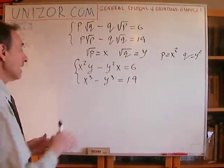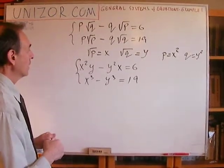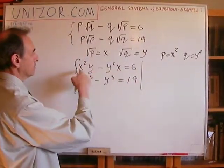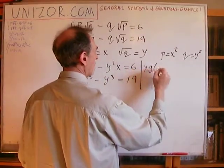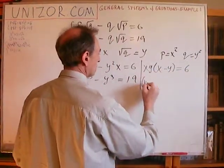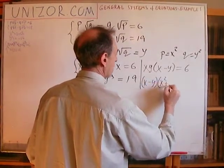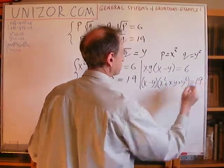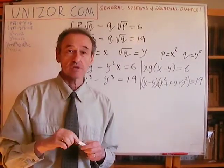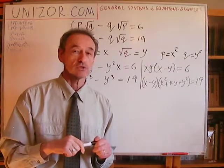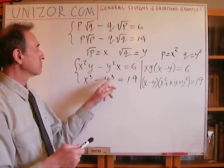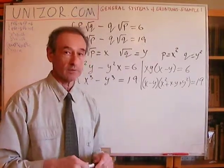Now, what can be done about this? Look — it's kind of symmetrical. I can factor out XY from the first equation to get XY(X minus Y) equals 6. And the second can be factored as (X minus Y)(X squared plus XY plus Y squared) equals 19. If you don't remember this formula, you can go back to one of my previous lectures on mathematical induction, where I present the representation of A^N minus B^N as (A minus B) times a polynomial of degree N minus one.